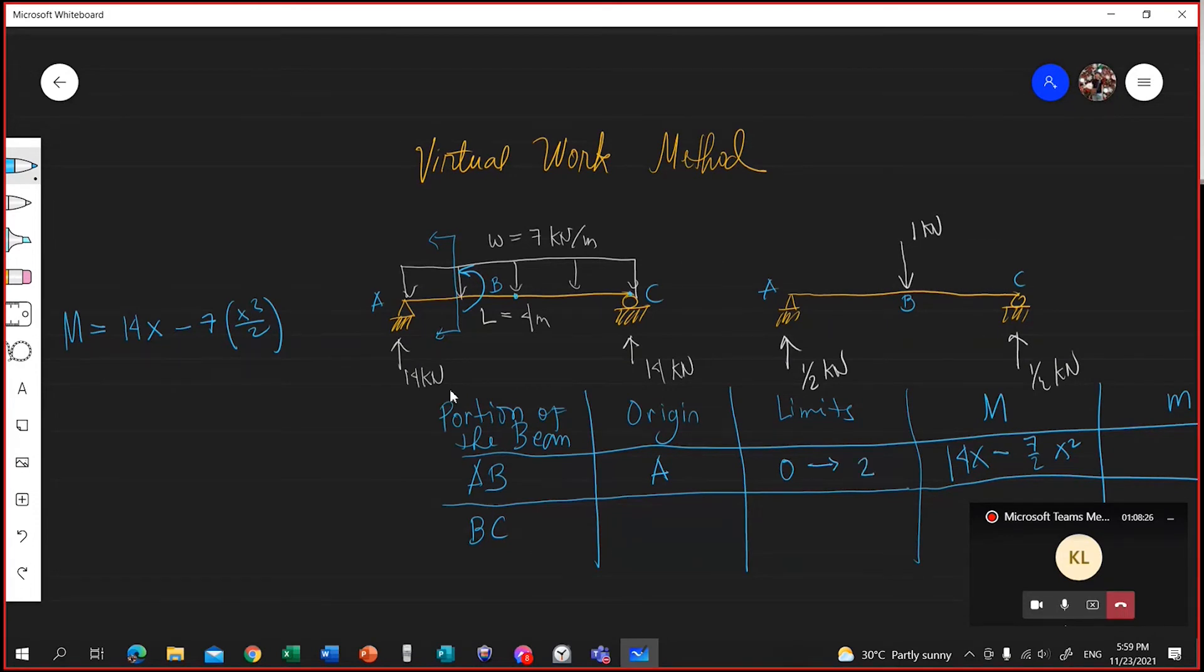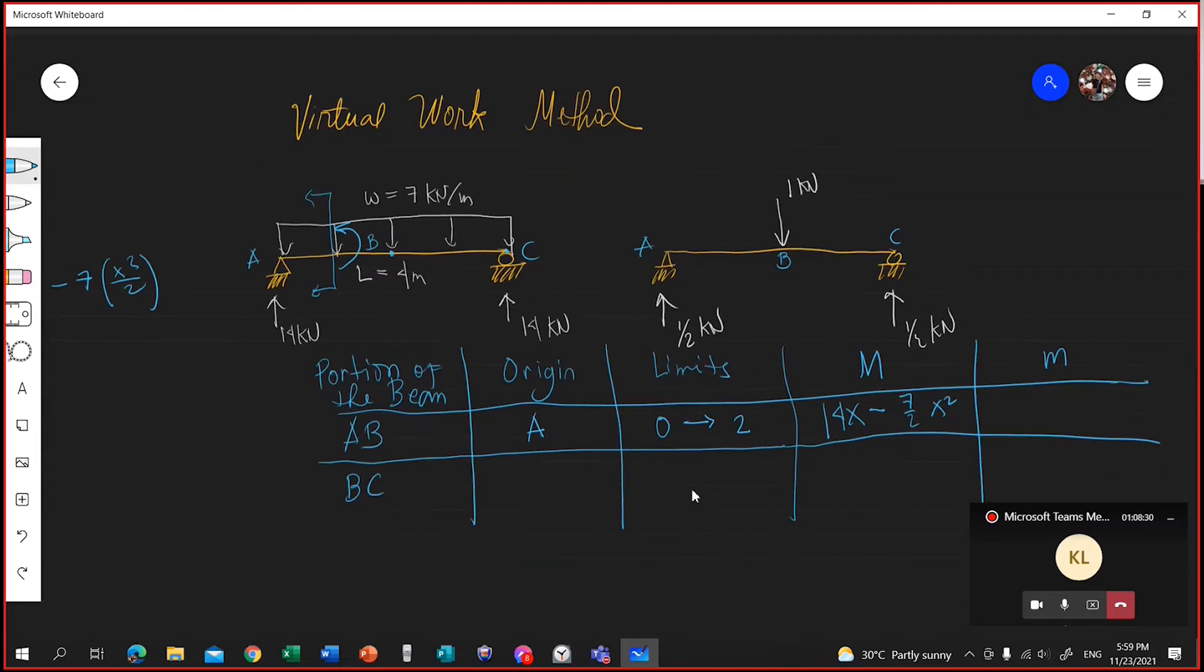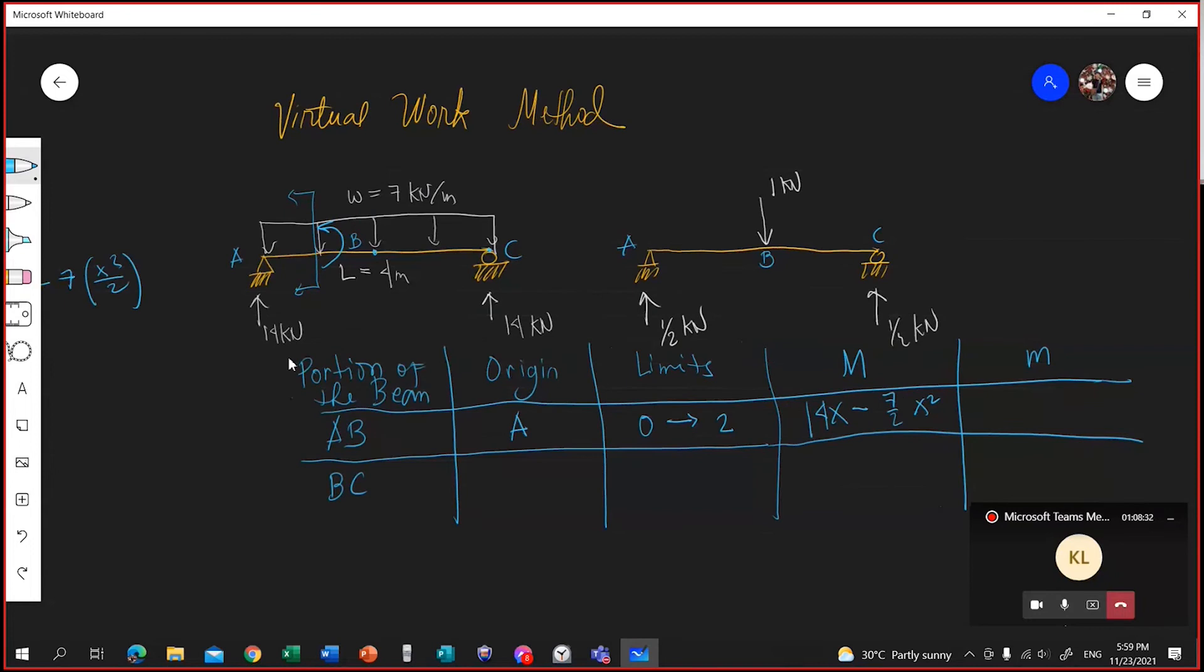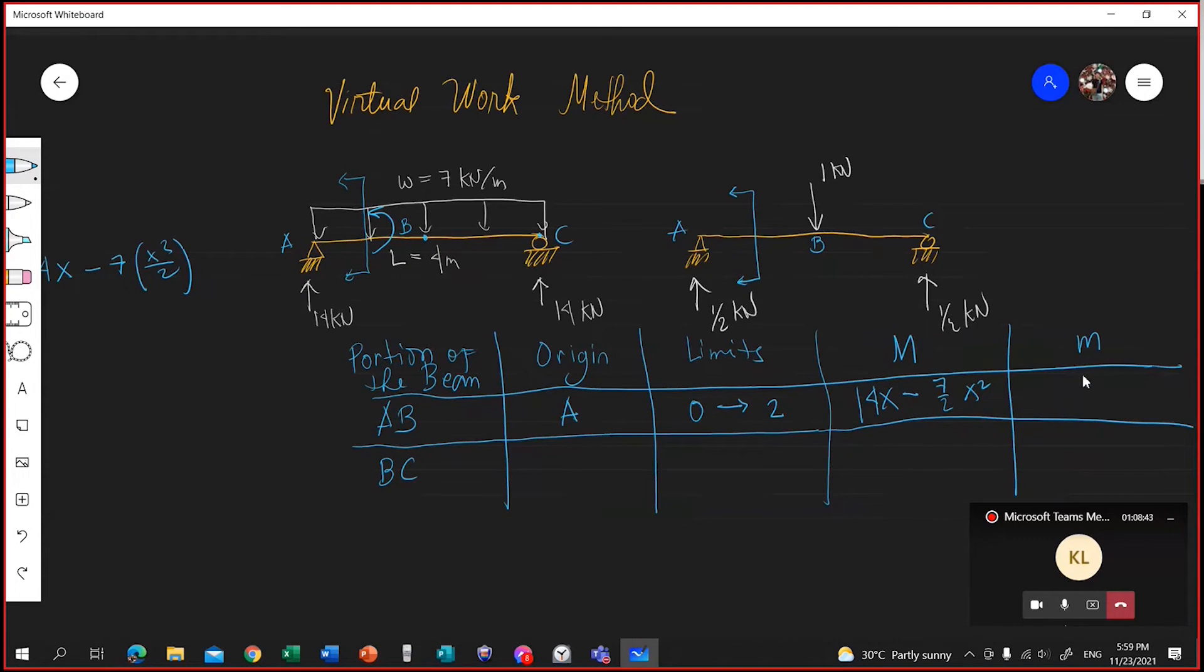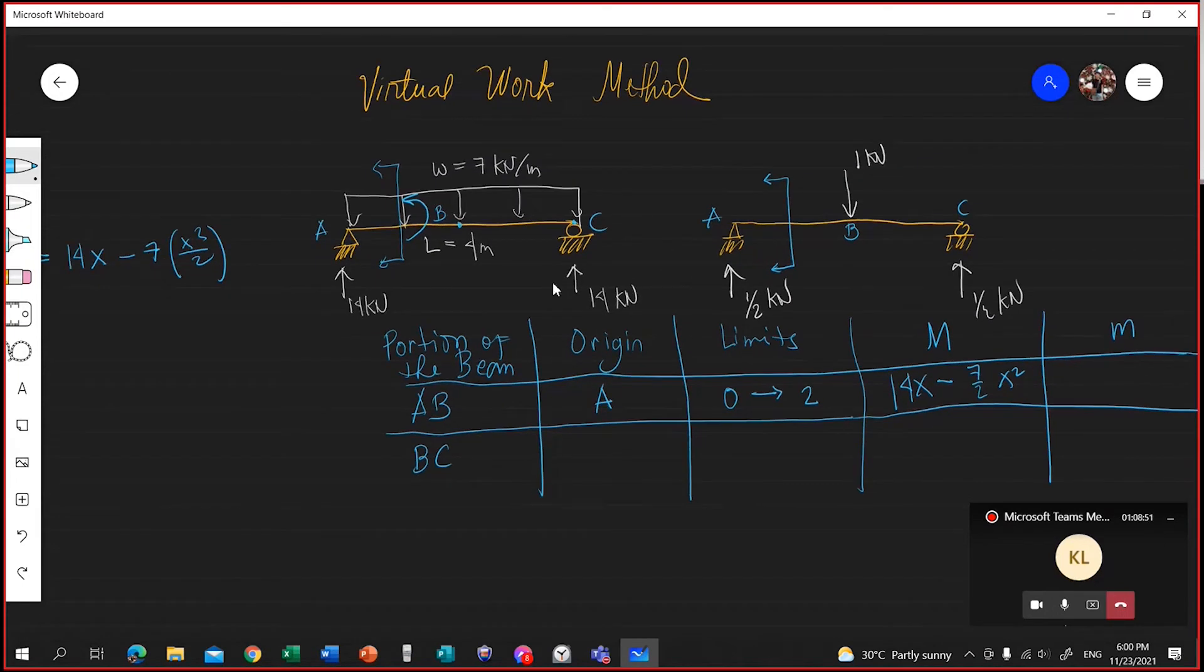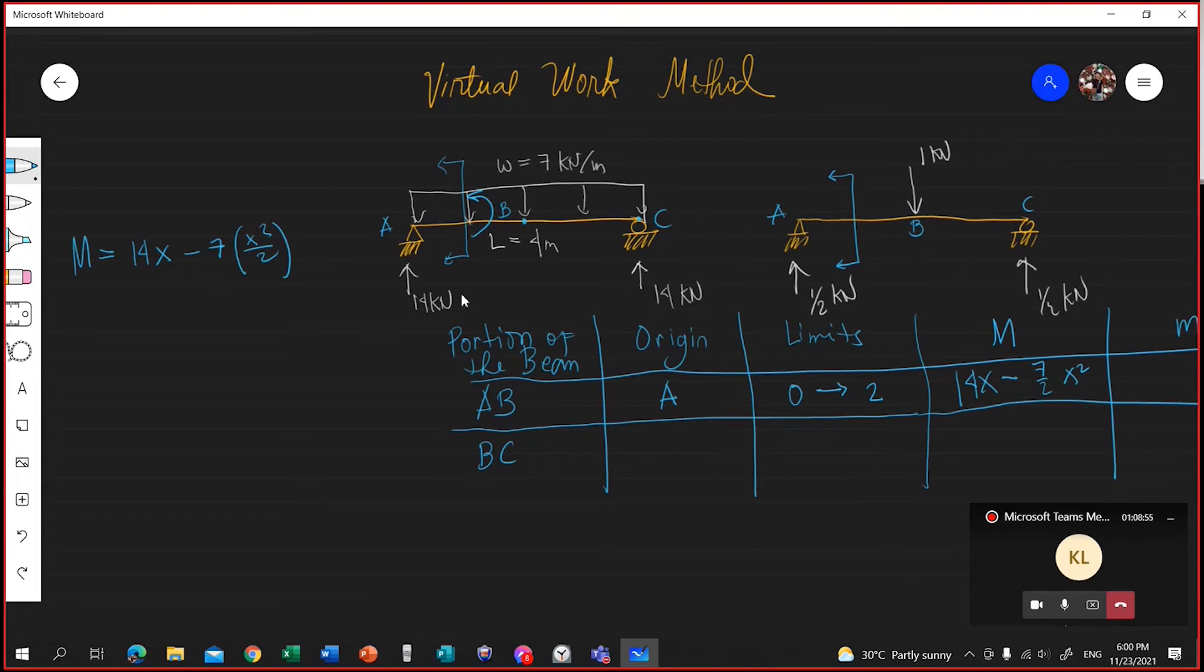Take note when you measure X here, it's from point A. That means your origin is at A. And your limit is from 0 to 2, because the mid-span is at 2 meters. Now pass the cutting plane at the virtual, at the unit load. Of course, it should have the same origin, same limit. And also the manner of constructing the moment equation for the small letter m should be the same with how you constructed the moment equation for the actual loads.